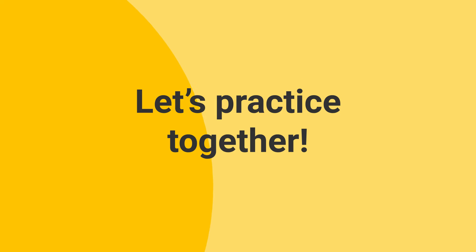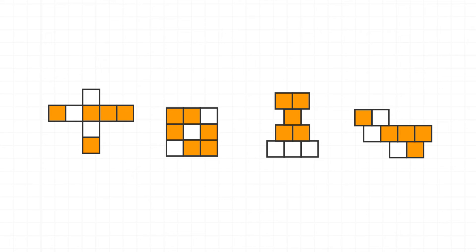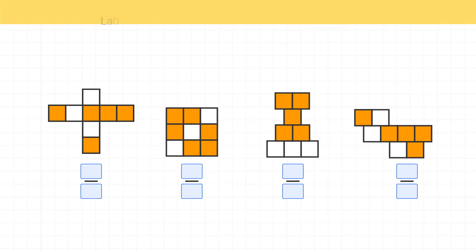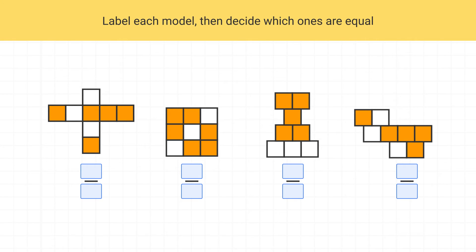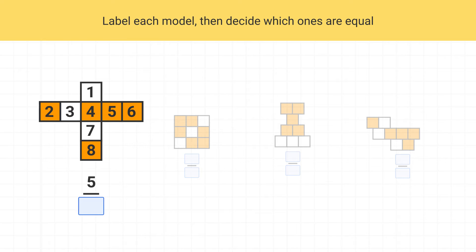Now let's practice finding some of these equal fractions together. Here are a bunch of different fractions that all look a little different, but some of them are equal to each other. To find out which ones are equal, let's start by labeling each model. In this first model, there are five shaded pieces and a total of eight pieces in the whole shape, so this is the fraction five-eighths.